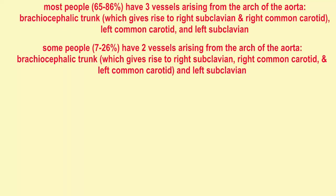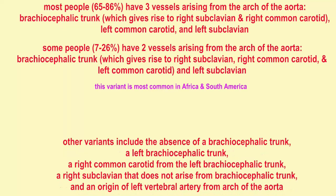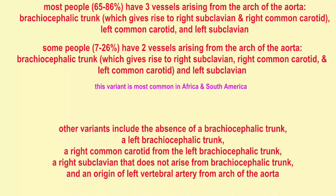Other variants include the absence of a brachiocephalic trunk, so the right common carotid and right subclavian would arise from the arch of the aorta; the presence of a left brachiocephalic trunk; a right common carotid artery originating from the left brachiocephalic trunk; a right subclavian that does not arise from the brachiocephalic trunk, so the brachiocephalic trunk could give rise to the two common carotids but not the right subclavian; and an origin of the left vertebral artery directly from the arch of the aorta.